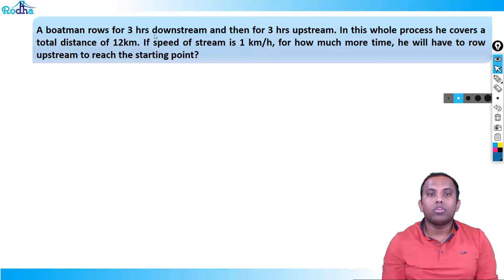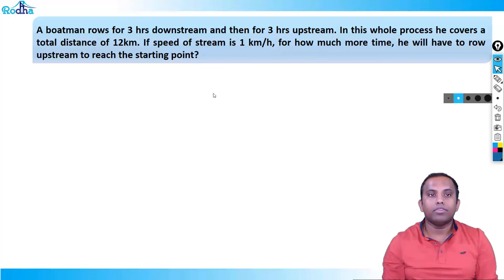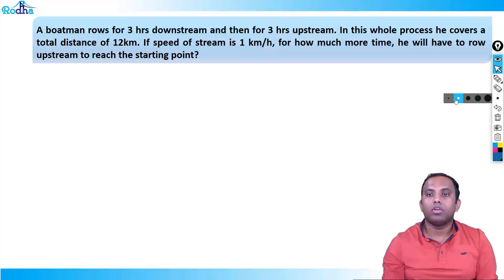A boatman rows for 3 hours downstream and then for 3 hours upstream. In this whole process, he covers a total distance of 12 km. If the speed of the stream is 1 km per hour, for how much more time will he have to row upstream to reach the starting point?